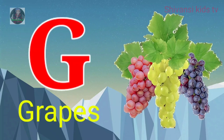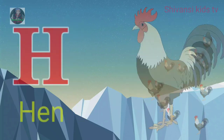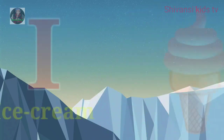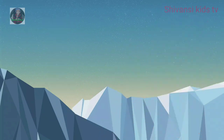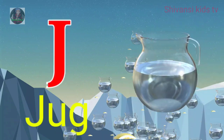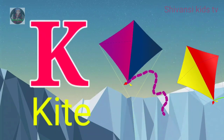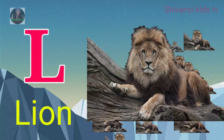G for grapes, H for hand, I for ice cream, J for jug, K for kite, L for lion.